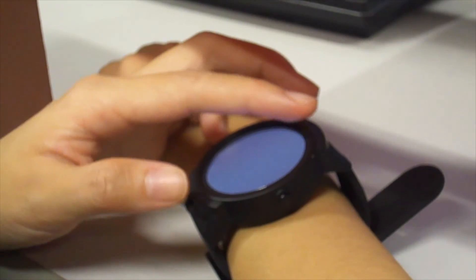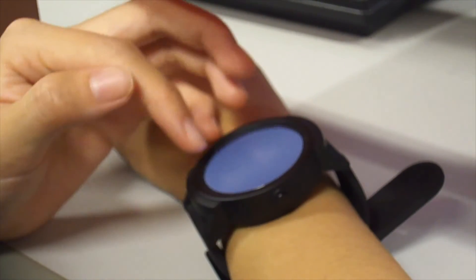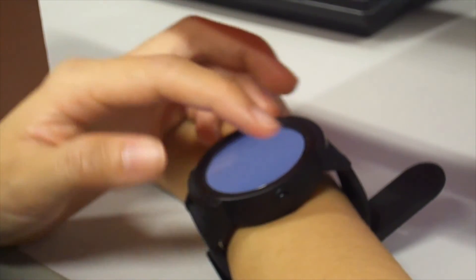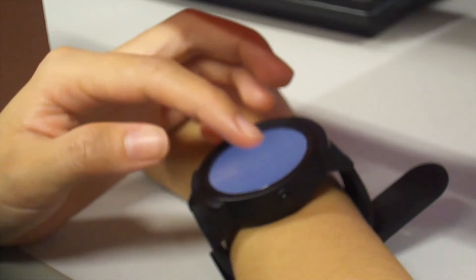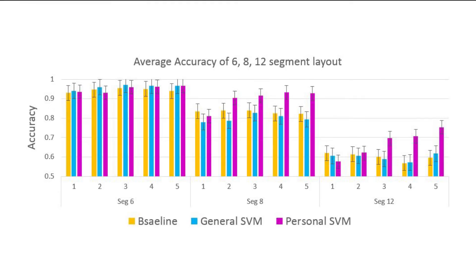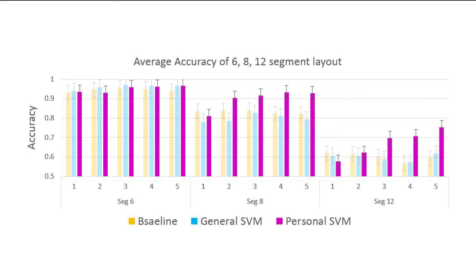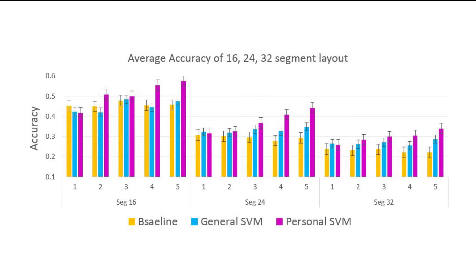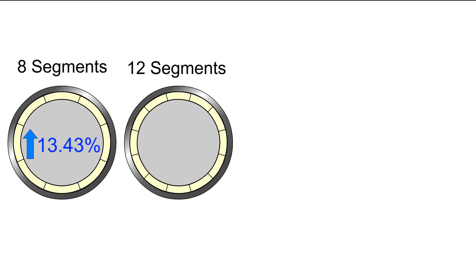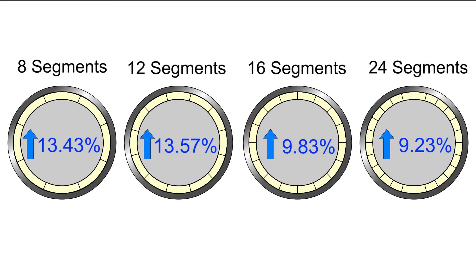We found that performance varies among users, and we conducted a six-day study to derive and evaluate a personal SVM model. Comparing with the general SVM model, the personal SVM model significantly improved accuracy for the 8, 12, 16, and 24-segment layouts.